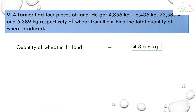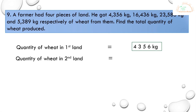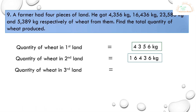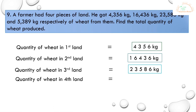Here is the solution. First statement: quantity of wheat in first land is equal to 4,356 kilos. Second statement: quantity of wheat in second land is equal to 16,436 kilos. Third statement: quantity of wheat in third land is equal to 23,586 kilos. Fourth statement: quantity of wheat in fourth land is equal to 5,389 kilos. Note that the unit 'kilos' is written after every number. Now we will do the addition.